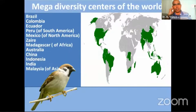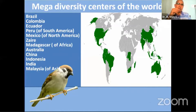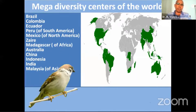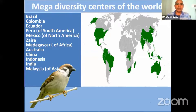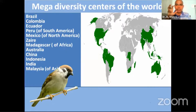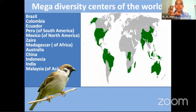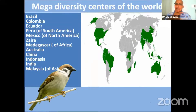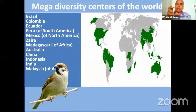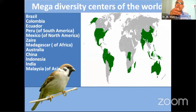Here we can see the mega diversity centers of the world. These include Brazil, Colombia, Ecuador, Peru, Mexico, Madagascar, Australia, China, Indonesia, India, and Malaysia. These are very important sites where you can observe the diversity of animal and plant species — they are the major centers supporting many animal, insect, and plant species.